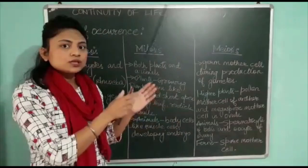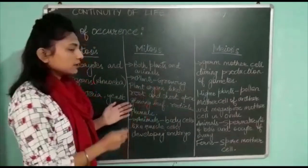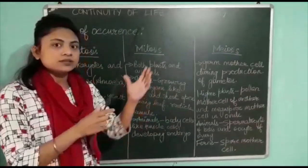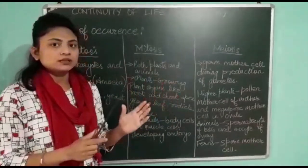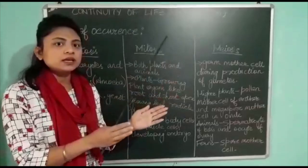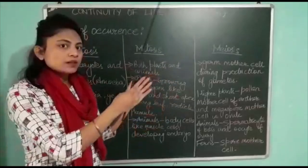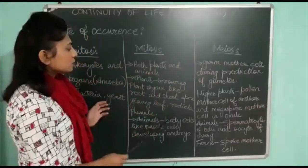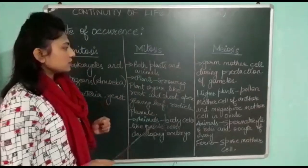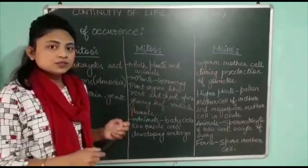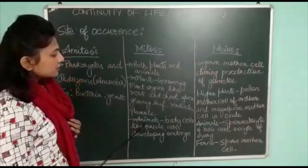Mitosis also occurs in germinating seeds — radicle and plumule — which will develop into a whole plant body. So in radicle and plumule, what we call mitosis cell division occurs.